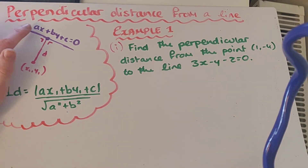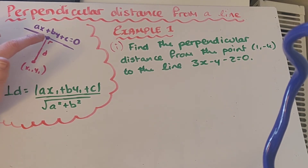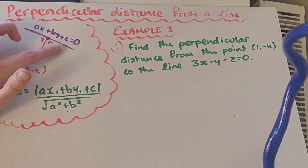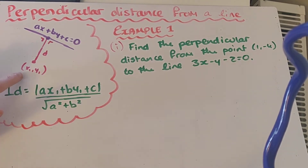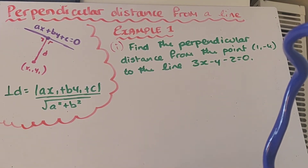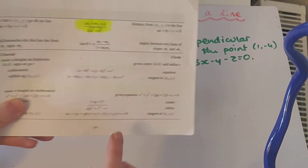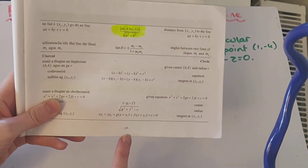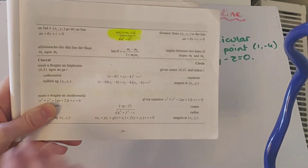Where a is the coefficient of x in our equation of the line, b is the coefficient of y in the equation of the line, and c is the constant. x1 and y1 are our two coordinates. And we can see that this formula for the perpendicular distance is on top of page 19 in our log tables.